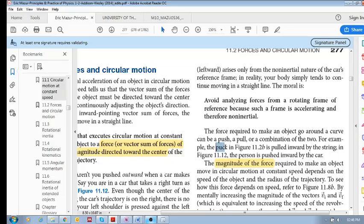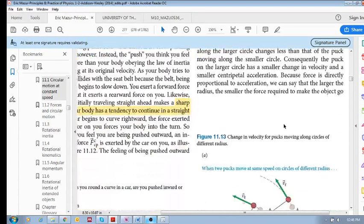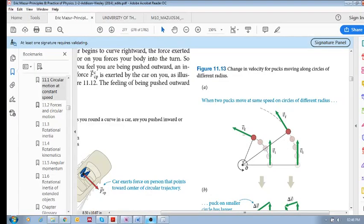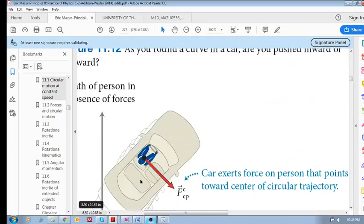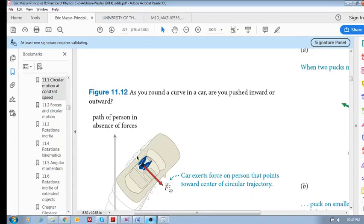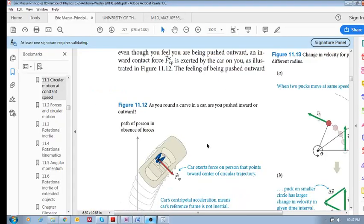For example, in figure 11.2b you have a puck which is pulled inward by a string. The string is applying a tension force towards the center. And in this case, it is a contact force of the car on the driver that's applying the force that points towards the center. All right, see you in the next one.